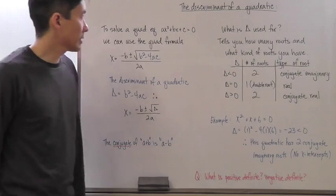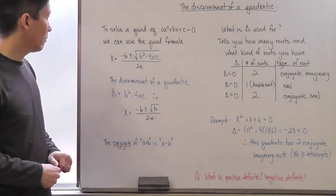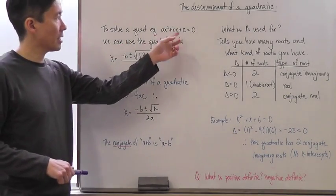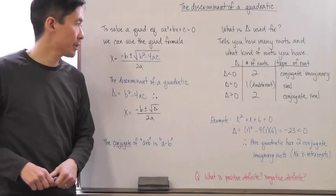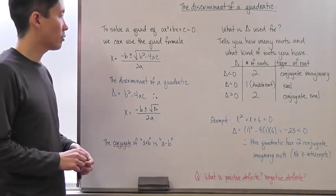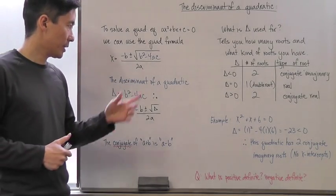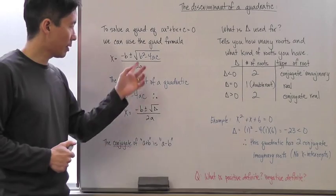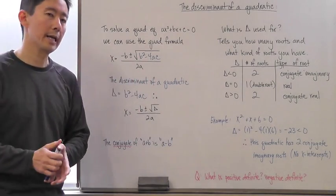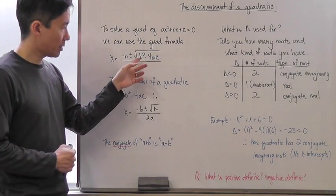Let's take a look at the discriminant of a quadratic. We talked about how you solve the quadratic equation ax² + bx + c = 0, and one of the methods you can use is the quadratic formula. Notice that I wrote the part under the radical sign in blue so we can focus on that.